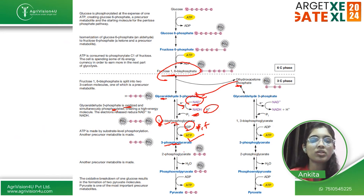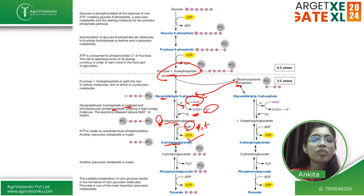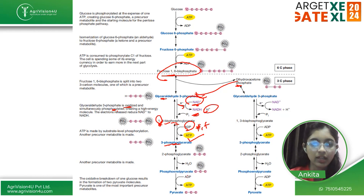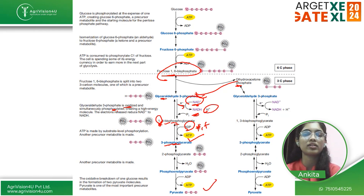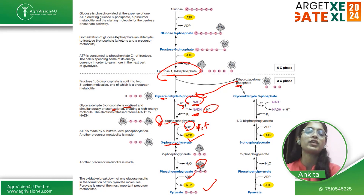Then 3-phosphoglycerate is converted to 2-phosphoglycerate — only the position changes, from the third position to the second position. Then 2-phosphoglycerate is converted to phosphoenolpyruvate (PEP), because an H₂O molecule is released. So the molecule formed is phosphoenolpyruvate. When phosphoenolpyruvate undergoes oxidative breakdown, it forms 2 pyruvate molecules — pyruvate acts as a precursor metabolite. To form pyruvate from PEP, the phosphate group is removed — ADP accepts that phosphate and becomes ATP, and you get pyruvate at the end.